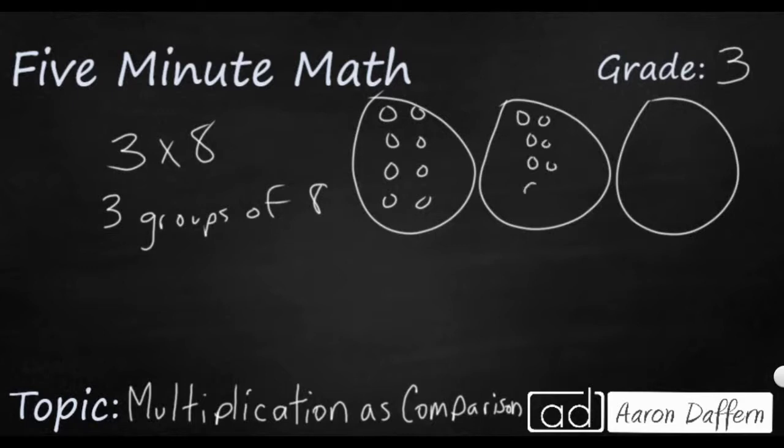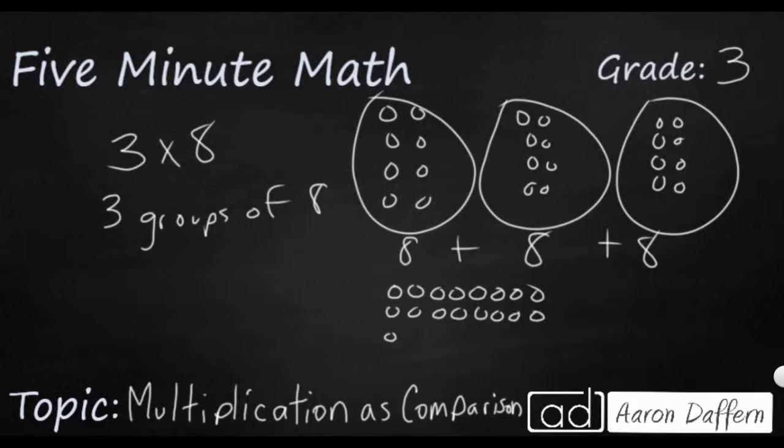We could also view this as repeated addition, so three groups of eight could also be 8 plus 8 plus 8. We can even make an array if we wanted to. That would be one row of 8 followed by two more rows of 8. But there's another way that we can describe multiplication that I want to make sure you are aware of, and it would be as comparison.